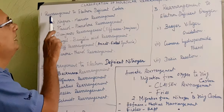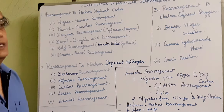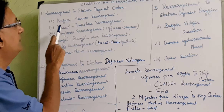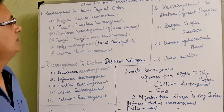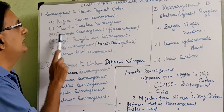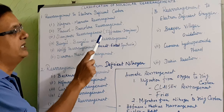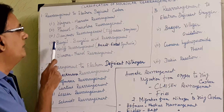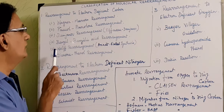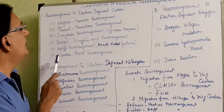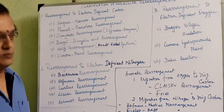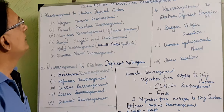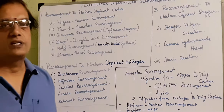Number one, the rearrangement to electron-deficient carbon. Examples listed here are: Wagner-Meerwein rearrangement, Pinacol-Pinacolone rearrangement, Demjanov rearrangement and the modified form Tiffeneau-Demjanov rearrangement, Benzil-benzilic acid rearrangement, Wolff rearrangement, and dienol-phenol rearrangement. All those come under the category of rearrangement to electron-deficient carbon.